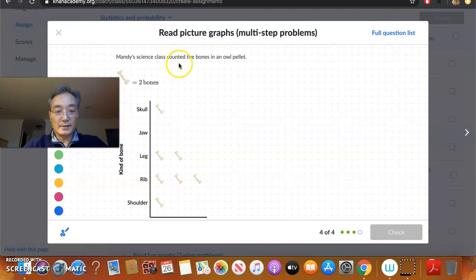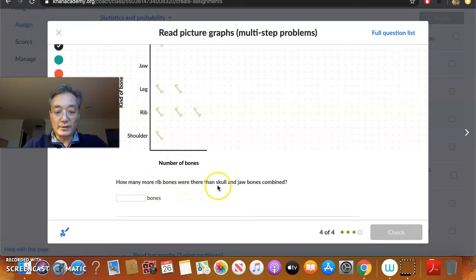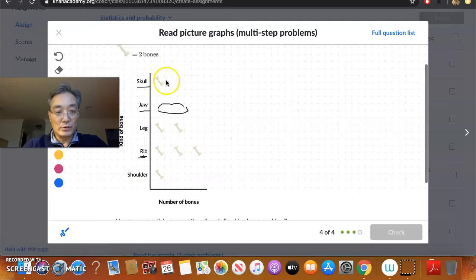And let's do one more. Here, Mandy's science class counted the bones in an owl pellet. So we have each bone picture represents two bones, and these are the types of bones. They have a skull, jaw, leg, rib, and shoulder. And the number of bones. How many more rib bones were there than the skull and jaw bones combined? Well, there were none for the jaw. There were two bones for the skull, and there were six rib bones. So it looks like there's going to be four more. Six minus two is four.